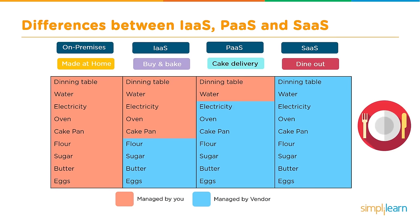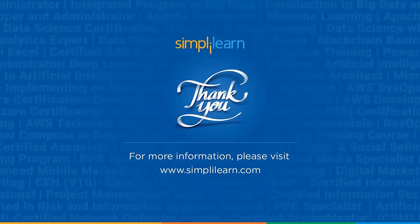You still have one more option: simply go out and dine. This is so much simpler — it requires no effort from you at all. You buy the fully finished and garnished cake, pay for it, and walk out with no responsibility for making it. It's the same way with SaaS — you buy the finished product and pay for the finished application. I really hope you enjoy this video. I'll meet you in the next video. Thank you.